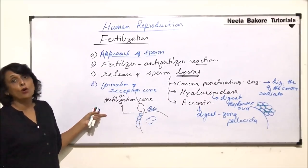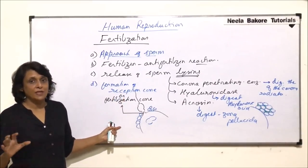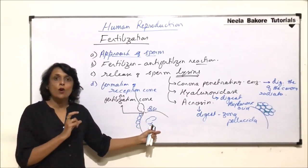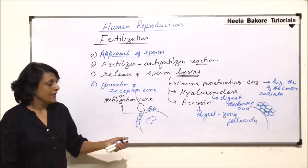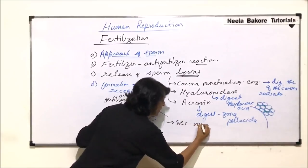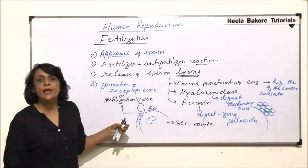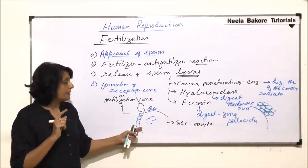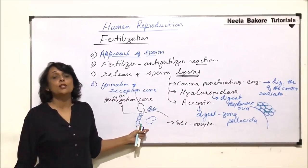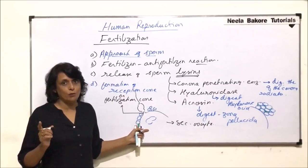But before that, few more changes are going to take place. Which is that next change which we will be taking up? This egg which we normally are using the word egg or ovum is not really an egg yet. It is a secondary oocyte. This secondary oocyte has to change into the egg. It is or rather it has to still undergo one division. That division is completion of meiosis 2 which would result in formation of the egg in the second polar body.